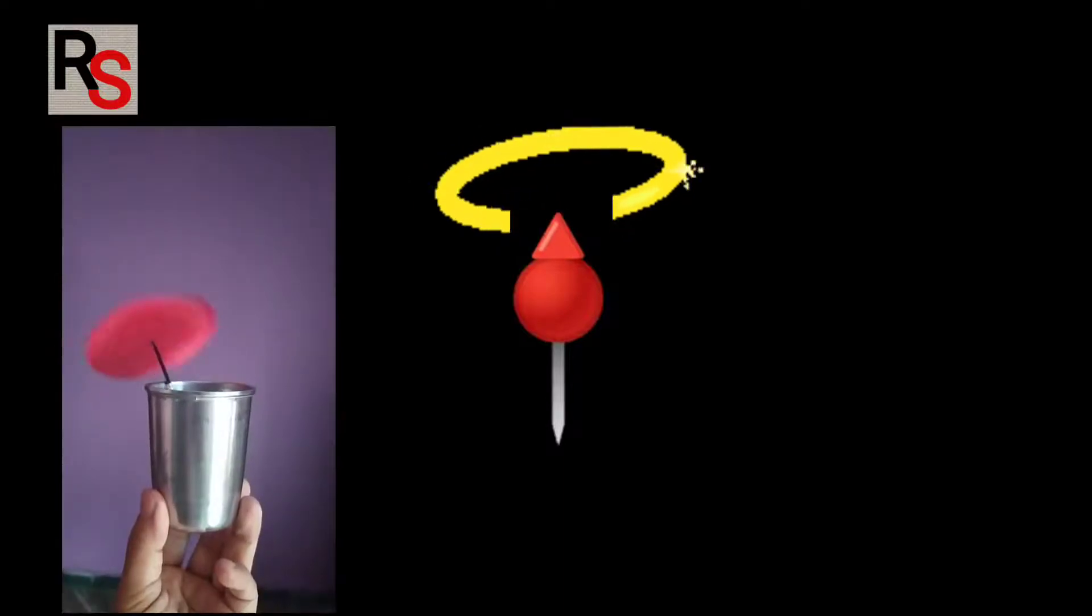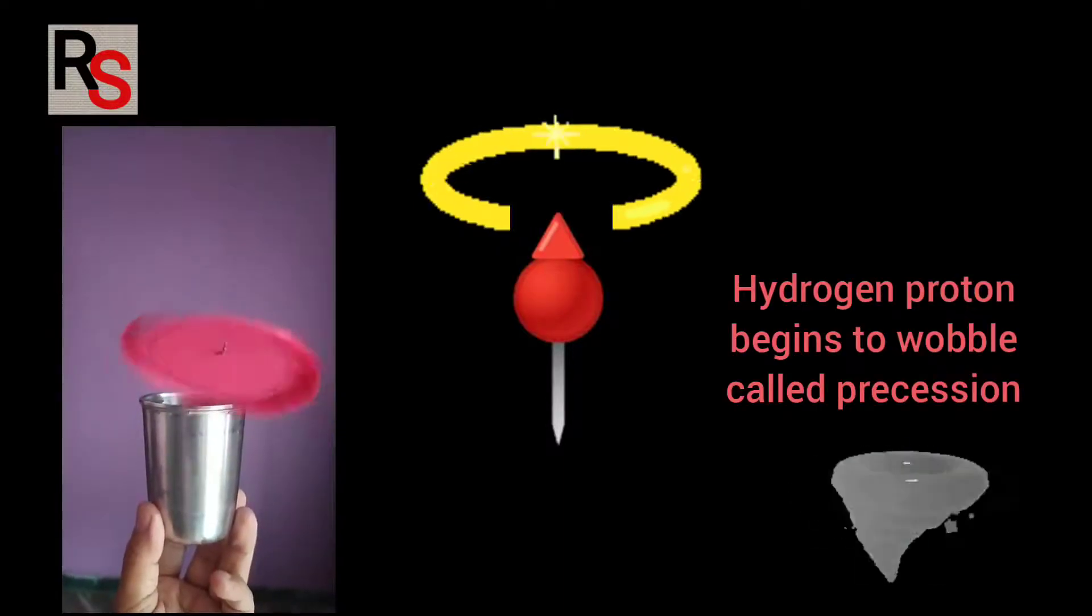Now hydrogen proton just don't sit straight but they begin to wobble just like a spinning top called precession.